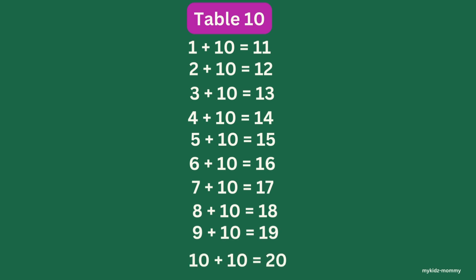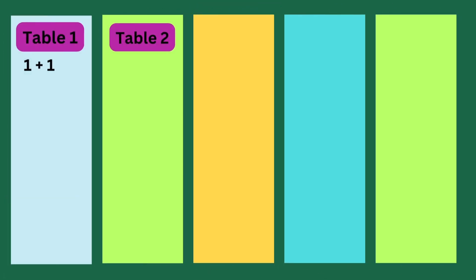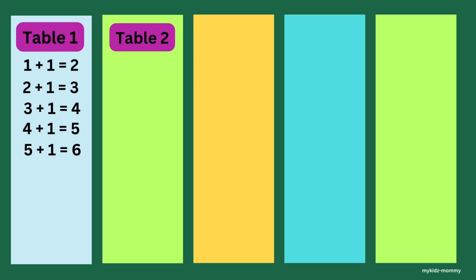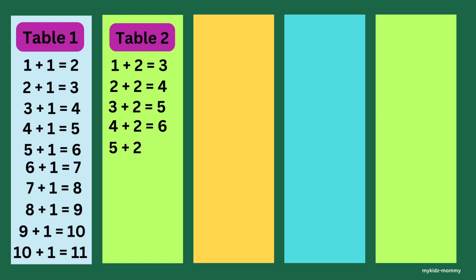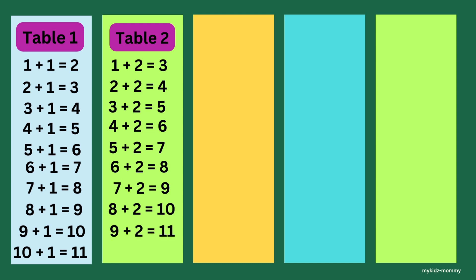10 plus 10 is 20. Okay kiddos, let's do a quick rewind. Table 1. 1 plus 1 is 2. 2 plus 1 is 3. 3 plus 1 is 4. 4 plus 1 is 5. 5 plus 1 is 6. 6 plus 1 is 7. 7 plus 1 is 8. 8 plus 1 is 9. 9 plus 1 is 10. 10 plus 1 is 11. Table 2. 1 plus 2 is 3. 2 plus 2 is 4. 3 plus 2 is 5. 4 plus 2 is 6. 5 plus 2 is 7. 6 plus 2 is 8. 7 plus 2 is 9. 8 plus 2 is 10. 9 plus 2 is 11. 10 plus 2 is 12. Table 3.